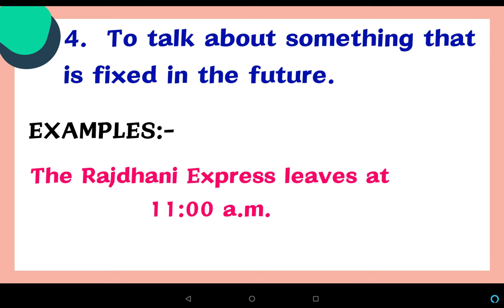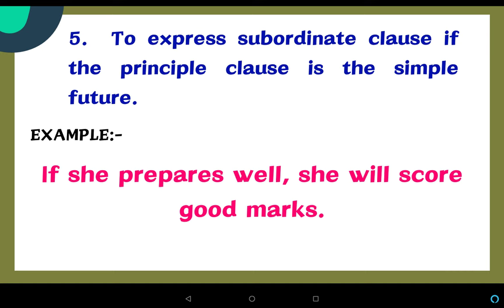Simple present tense is also used to talk about something that is fixed in the future. For example: the Rajdhani Express leaves at 11 a.m. Also, to express a subordinate clause when the principal clause is in simple future tense: if she prepares well, she will score good marks. Here 'she will score good marks' is the principal clause, and 'if she prepares' is the subordinate clause, which uses simple present tense.